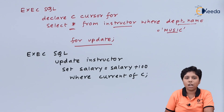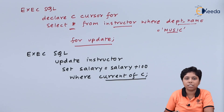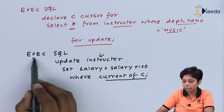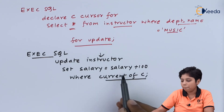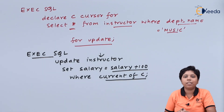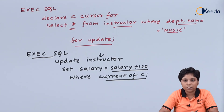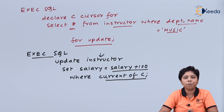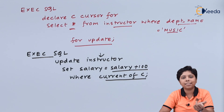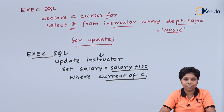Using WHERE CURRENT OF C, which means if C is the current cursor, we can update the instructor in the Embedded SQL statement by adding 100 to salary. In this way we can update or insert any value using Embedded SQL, and we can also use rollback, commit, and savepoint using EXEC SQL ROLLBACK and EXEC SQL COMMIT.